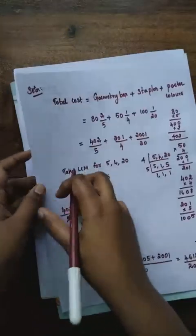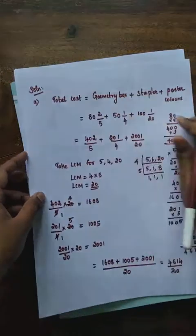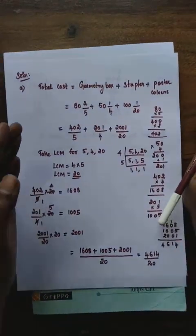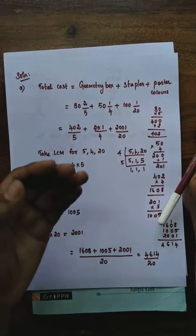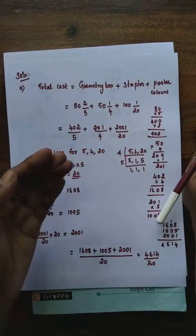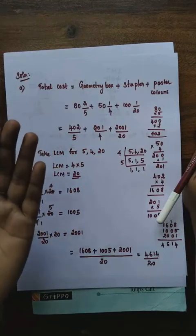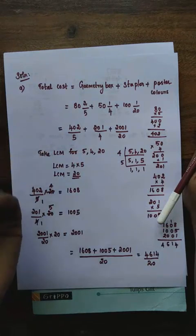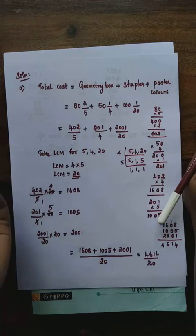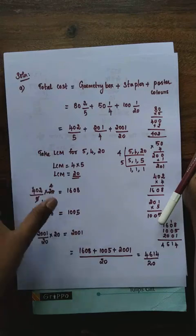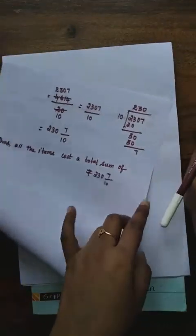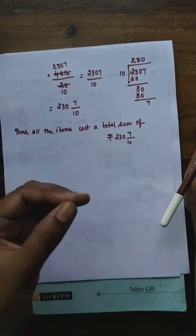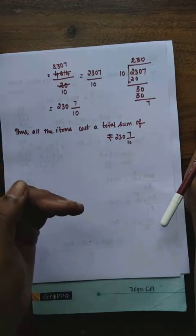We have completed the first question. They asked to find the total cost. We wrote the cost of each item — geometry box, stabler, and poster colors — separately. Then we converted the mixed fractions to improper fractions, checked the denominators, found the LCM, made all denominators the same, added all the numbers, and converted the result back to mixed fraction form.